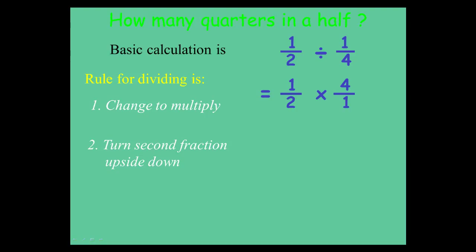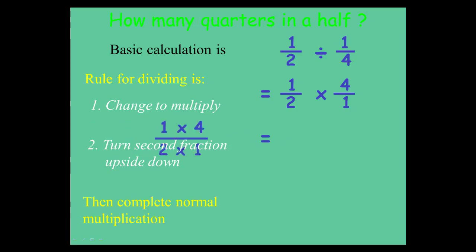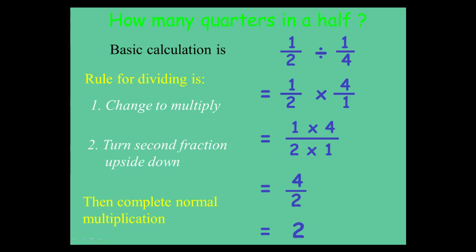To get your new numerator, you do 1 times 4. To get the new denominator, you do 2 times 1. Tidy that up, and you end up with 4 over 2, and 4 divided by 2 is 2. And that's all there is to it. So that's how you divide by a fraction — you multiply by its reciprocal. You flip it upside down and multiply.